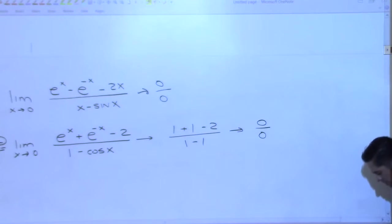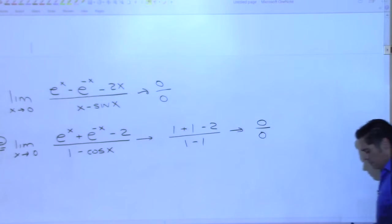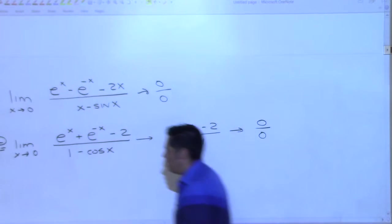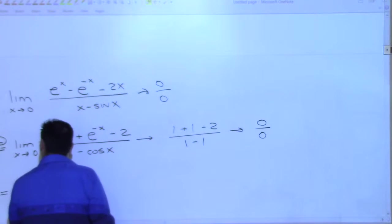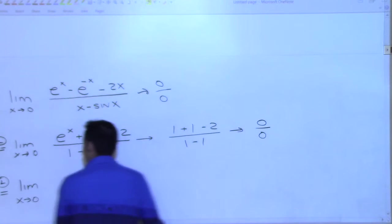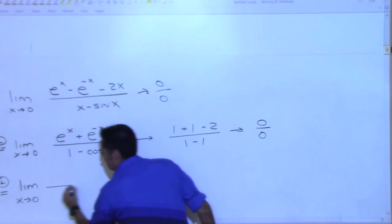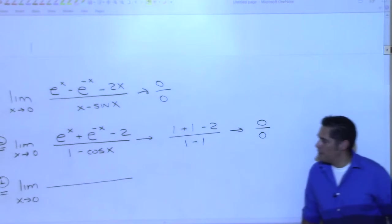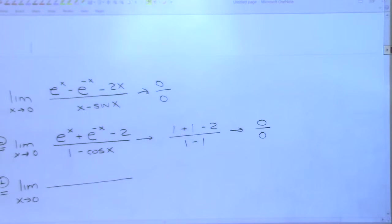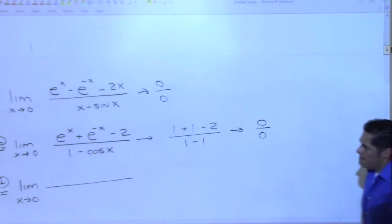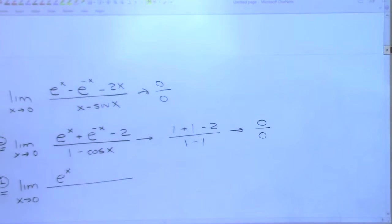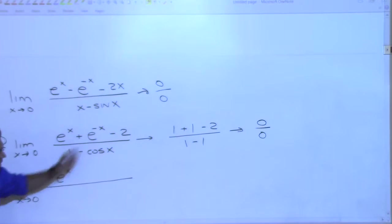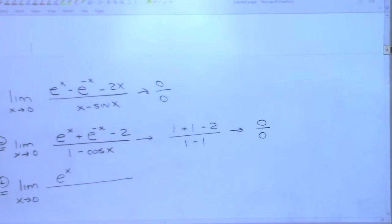Apply L'Hôpital again. Rasul is going to tell us what we get. Rasul, top — derivative. E to the x. Be careful on this one — you're taking the derivative of the previous result now. The same thing: plus e to the x.